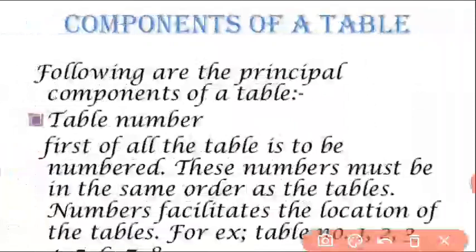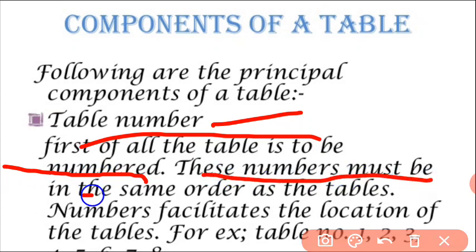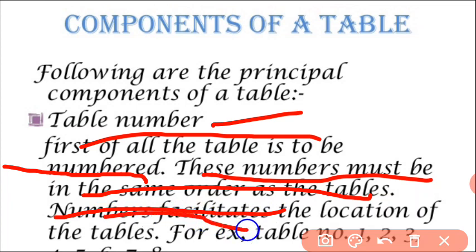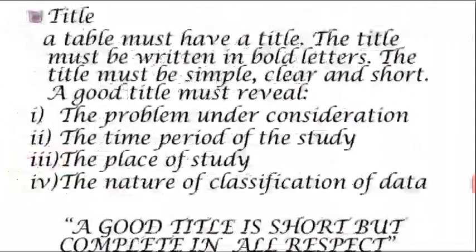Now, what are the components of a table? There are several components. The first one is table number. Whenever you are preparing a table, you have to number it — table number one, table number two, and so on. These numbers must be in the same order as the tables, in a sequence, in chronological order.